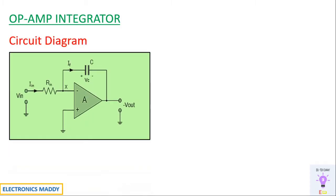This is a circuit diagram of an op-amp integrator. If you carefully observe, with respect to the differentiator, the position of the resistor and the capacitor is interchanged. That is, there is a feedback capacitor instead of a feedback resistor.